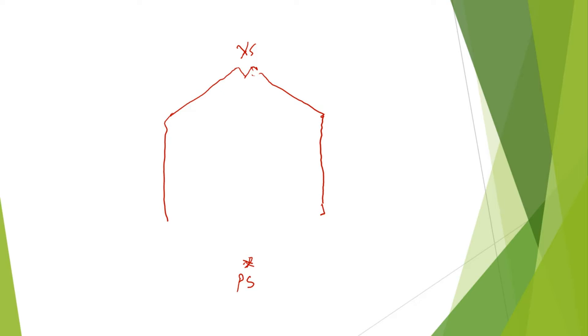In the midline below, just opposite the xiphisternum, is the pubic symphysis, which is the union between the two pubic bones. The pubic symphysis is joined by the inguinal ligament on the lateral abdominal wall. The point where the inguinal ligament starts is the anterior superior iliac spine, which is very much palpable on abdominal examination.